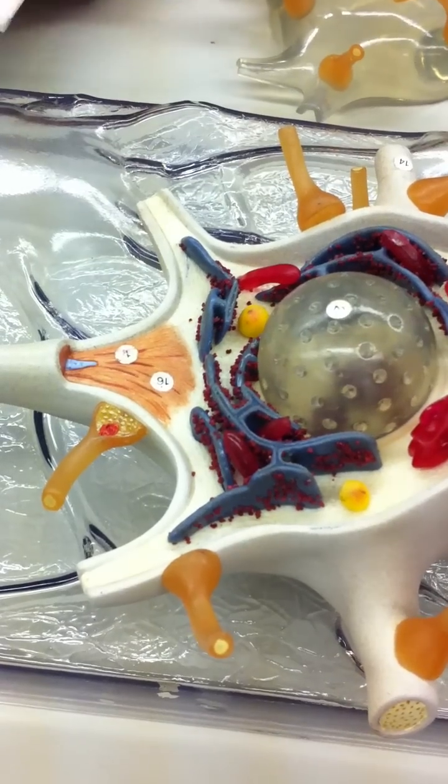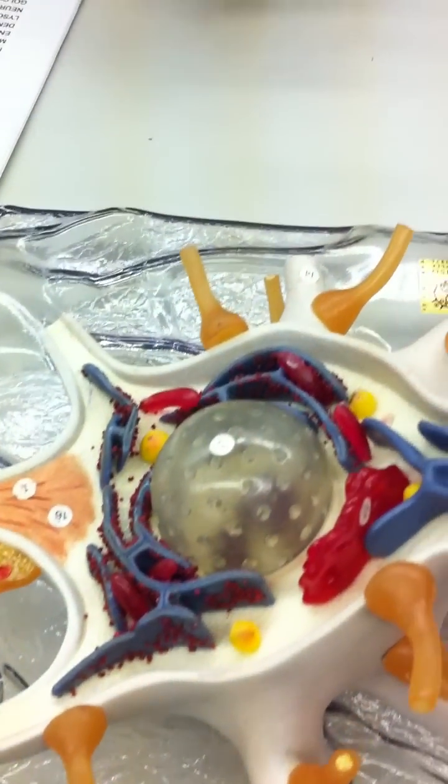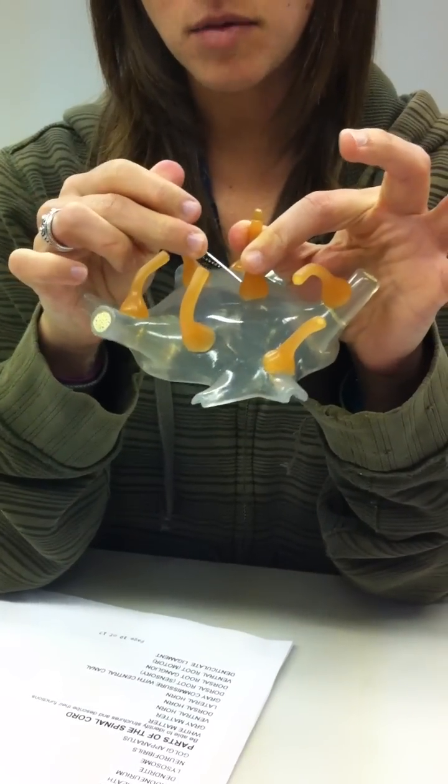Pre-synaptic axon terminal. So pre-synaptic axon terminal is, axon terminal means the end of an axon. The terminal is the end of the axon. So if this is another neuron, this is the end of its axon. And so it's the pre-synaptic axon terminal.